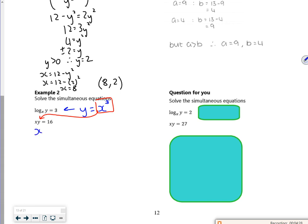So I've got x lots of x cubed is 16. So x to the power of 4 is 16. So x is what? 2, 4, 8, 16. Plus or minus 2.